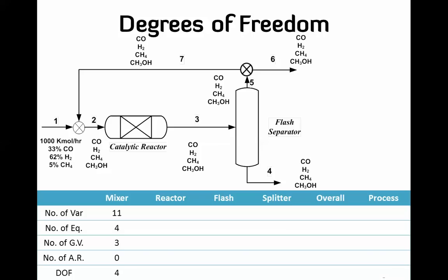For the catalytic reactor: eight component variables plus one reaction gives nine variables, four equations, no given variables, and one additional relation (conversion), so the degrees of freedom is four. For the flash separator: four components in and four out gives twelve variables, four equations, no given variables, and four relations between stream 3 and stream 4, so the degrees of freedom is also four.